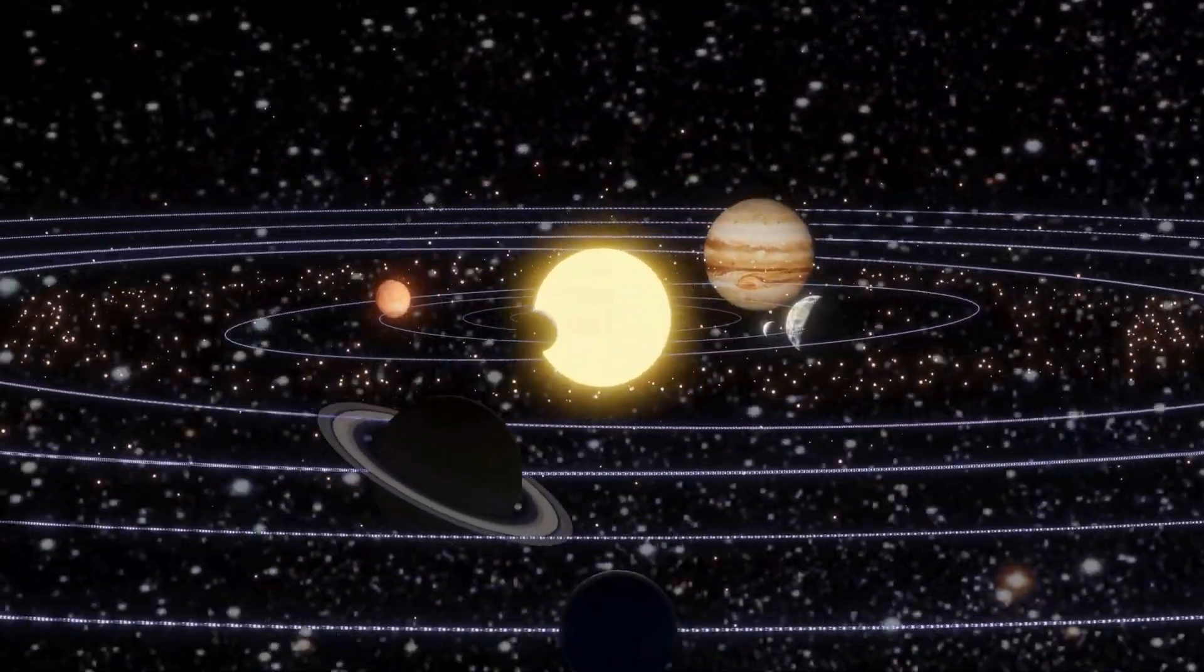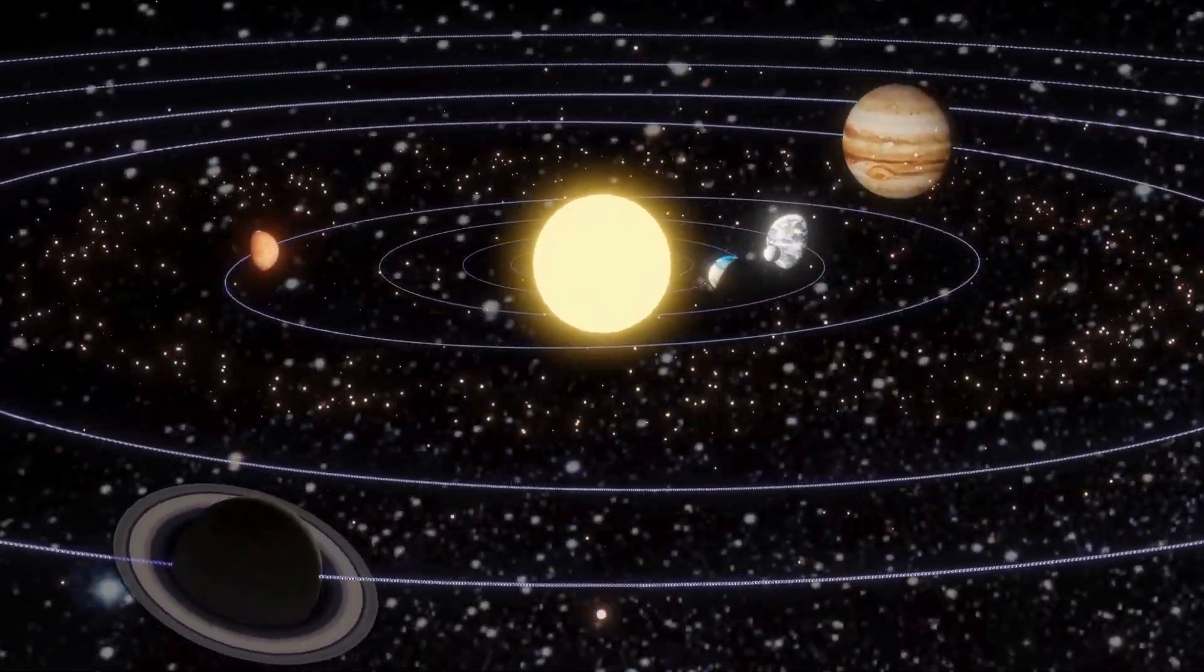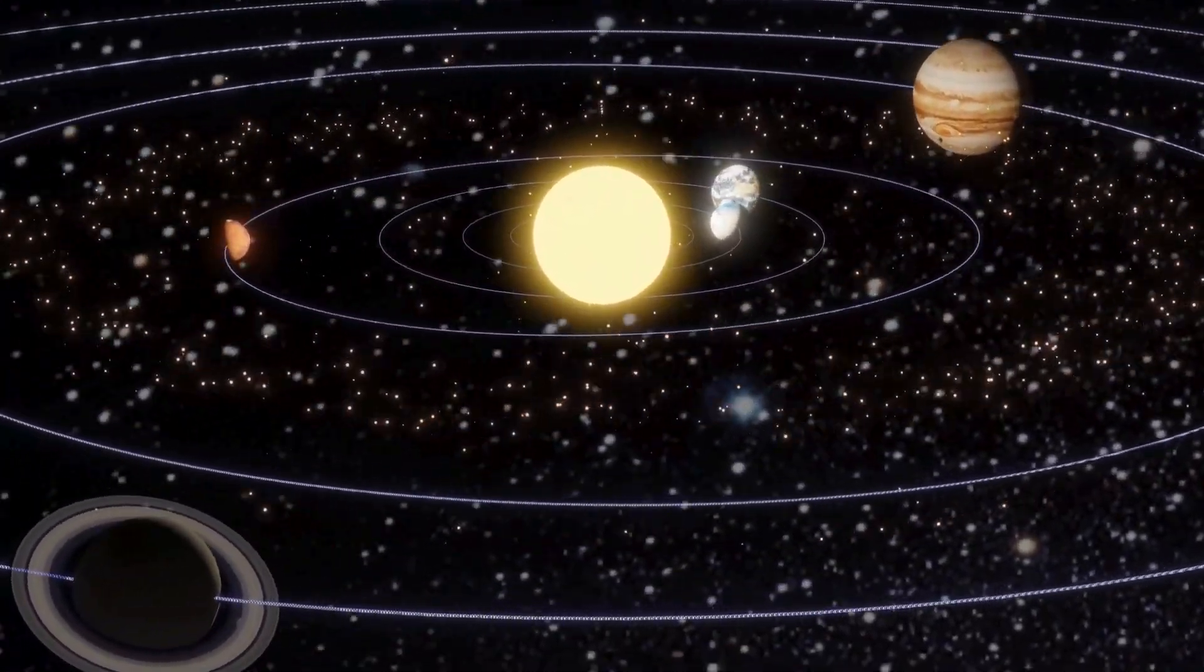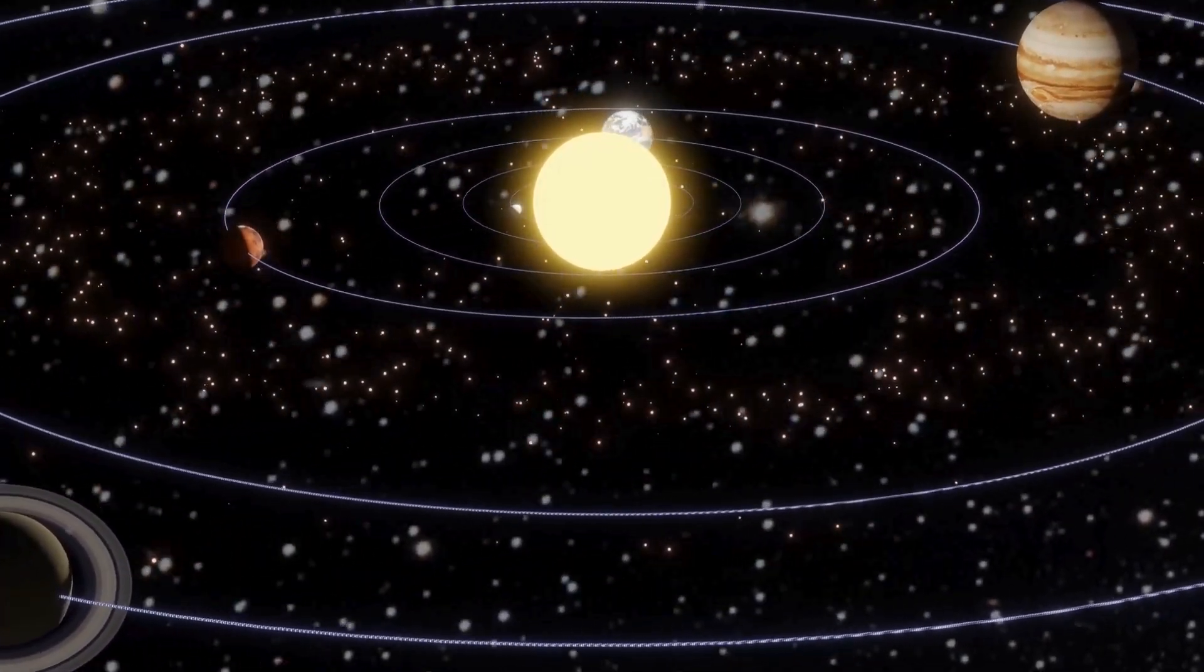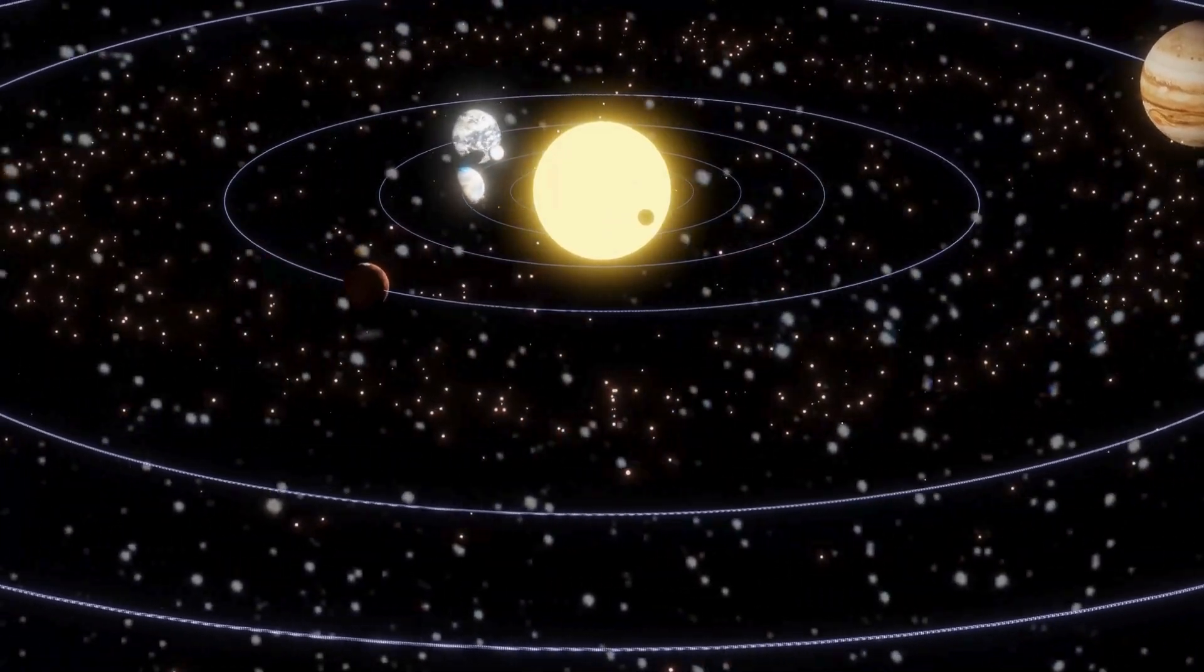So, that's our solar system! A family of planets dancing around the Sun, each with its own story to tell! And here we are, the Moon, orbiting Earth, and watching over everyone! It's quite a celestial party, don't you think?